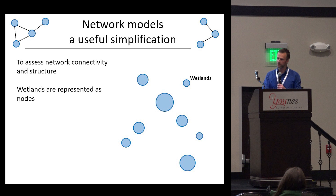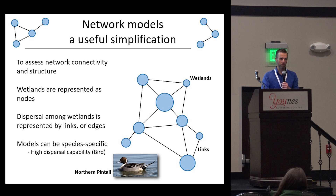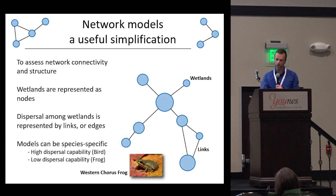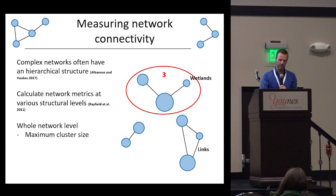For this we used network models — a useful simplification to answer these questions. We treat wetlands as nodes in the network, and if dispersal is possible between wetlands, we represent that with links or edges. We can make these models species-specific by setting them to certain dispersal capabilities. A species with high dispersal capability, like the northern pintail, will have many links connecting wetlands. But the same set of wetlands might function very differently for a species with very low dispersal capabilities, like the chorus frog, where some dispersal between wetlands is simply not possible because they're too far apart.